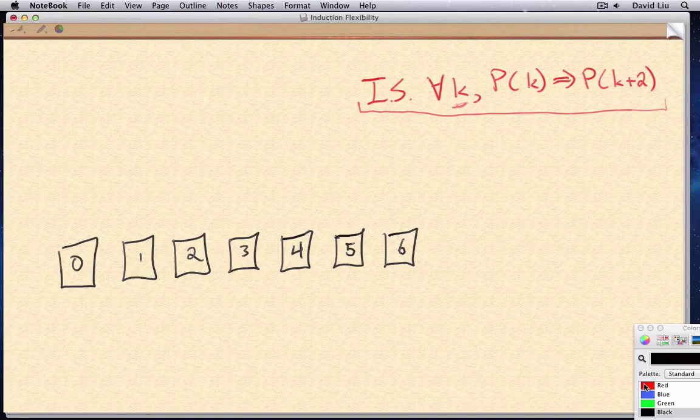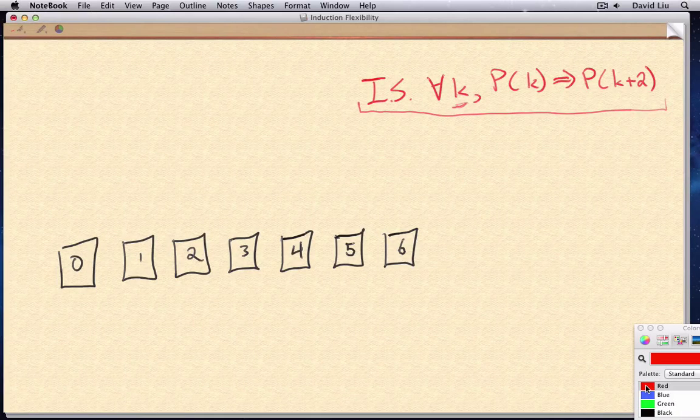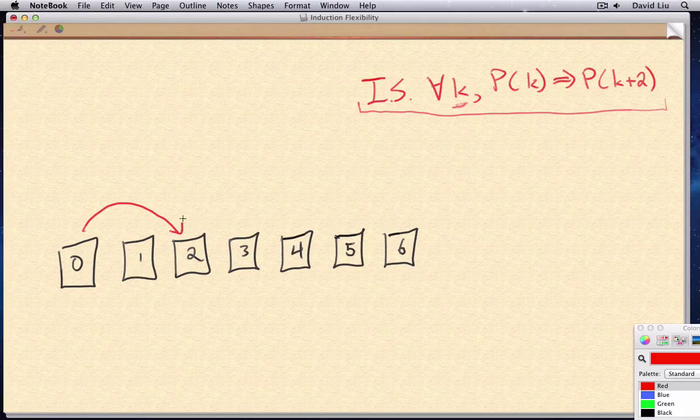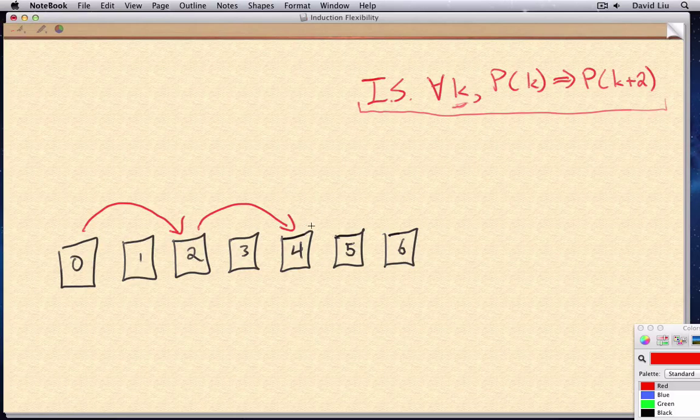That means that the picture we had on the previous slide was a little misleading. Because the picture that we had before showed the even links, zero to two, two to four, etc.